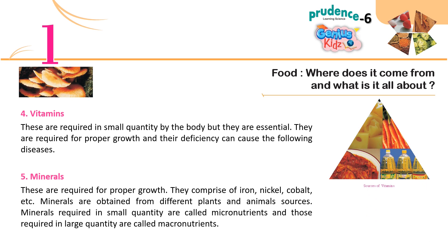4. Vitamins: These are required in small quantity by the body but they are essential. They are required for proper growth, and their deficiency can cause various diseases. 5. Minerals: These are required for proper growth. They comprise iron, nickel, cobalt, etc. Minerals are obtained from different plant and animal sources. Minerals required in small quantity are called micronutrients, and those required in large quantity are called macronutrients.